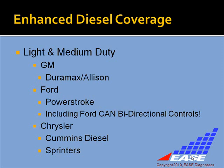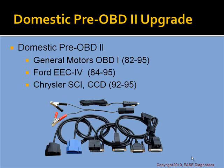For domestic vehicles, we also have enhanced diesel coverage for both light and medium duty trucks. In GM, we support Duramax and Allison transmissions. On Ford, we support PowerStroke diesel engines and Ford CAN bidirectional controls — extremely important on newer Ford CAN vehicles. Chrysler supports Cummins diesel and Sprinter controllers. If you'd like to work on domestic pre-OBD2 vehicles, we have a cable upgrade available — the software is already there, just purchase the cable set to work on older GM, Ford, and Chrysler vehicles.